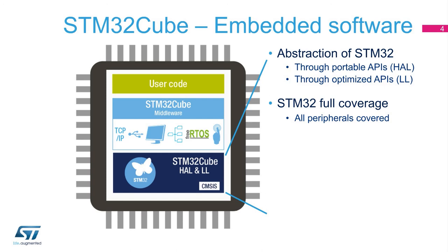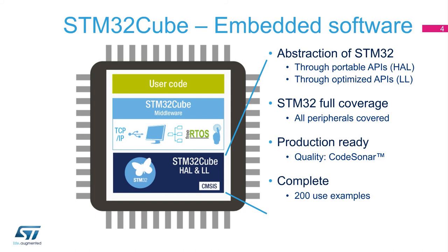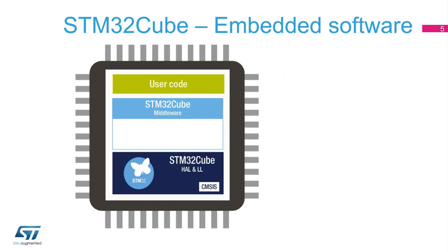This highly portable set of APIs is completed with an additional set of function calls to support specific STM32 features. The high quality of the hardware abstraction layer and low layer APIs is ensured using a code static analysis tool, CodeSonar, from GramaTech — an industry standard that ensures safer implementations for the final user. In addition, more than 200 examples, depending on the MCU and hardware board, are provided to help you use the software and the microcontroller. The HAL and low layer APIs come with a BSD license, one of the best open-source and business-friendly licenses.